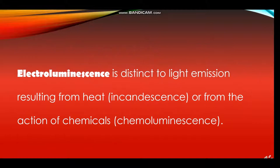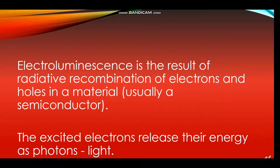Electroluminescence is distinct from light emission resulting from heat (incandescence) or from the action of chemicals (chemoluminescence). Electroluminescence is the result of radiative recombination of electrons and holes in a material, where the excited electrons release their energy as photons.